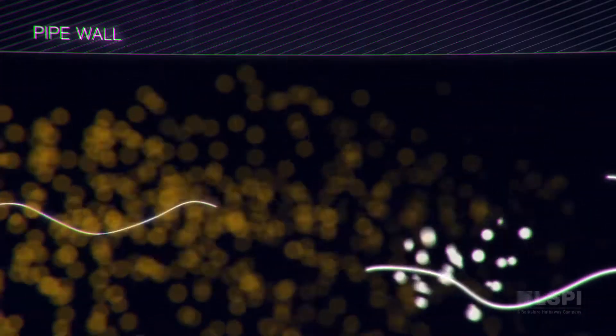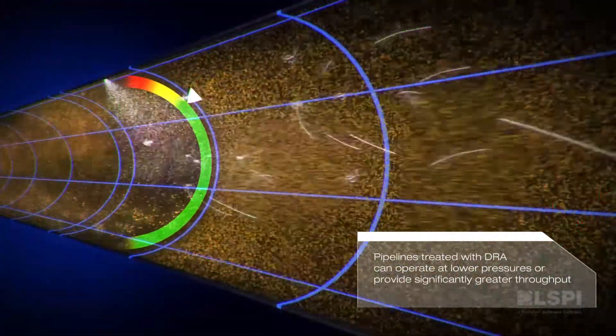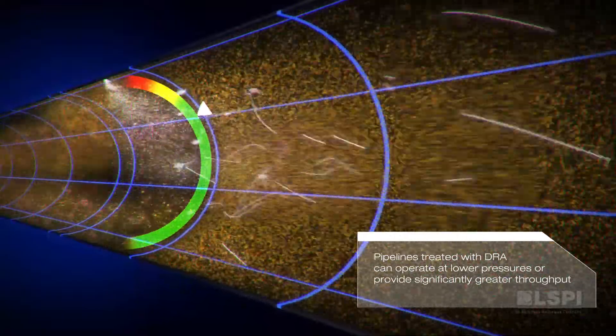When DRA is injected into a pipeline, the result is fluid particles moving more efficiently in a less turbulent flow pattern with less wasted energy.